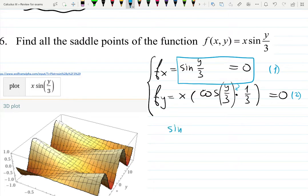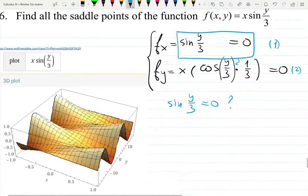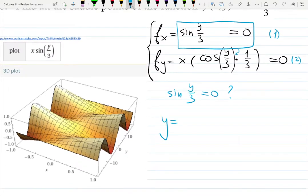When sin(y/3) gives you zero, there are infinitely many points. When y is zero, sine of zero is zero. Then at π, to get π inside, y should be 3π. Then 3π/3 gives you π. Sine of π is zero, so that works. Then 6π and so on. You can always add plus and minus.